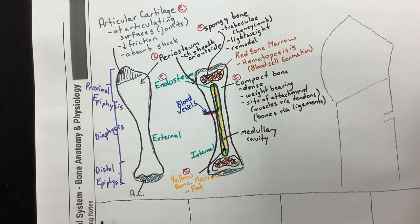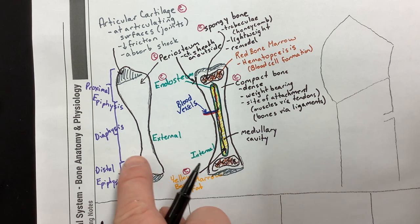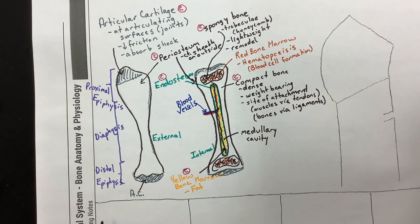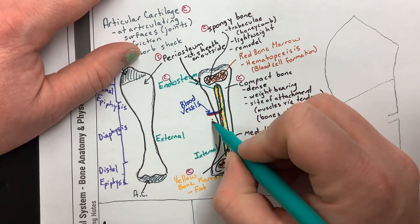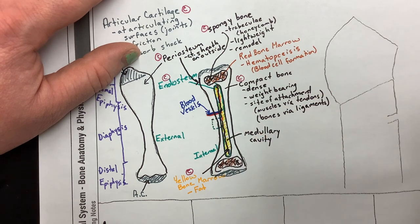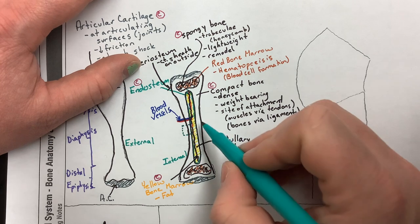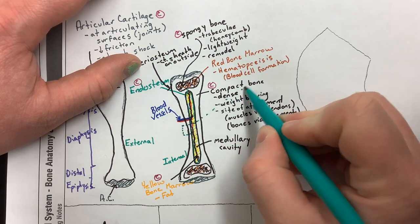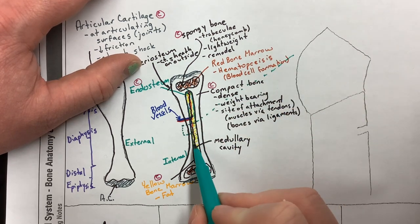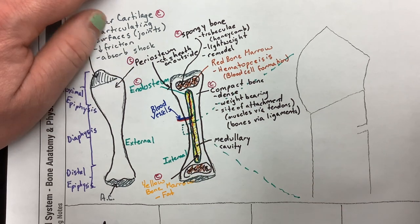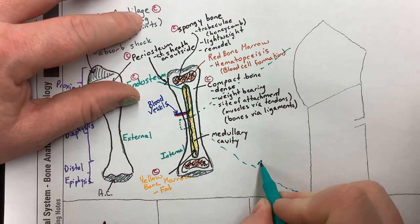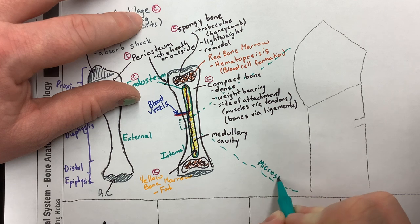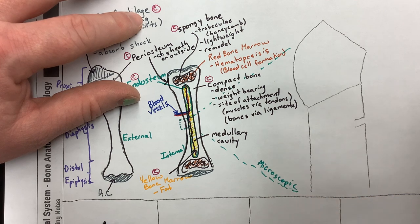So far we've covered gross anatomy — things visible to the naked eye. Now we'll zoom in to see how bone looks microscopically. We're going to take a small section and create an exploded view showing external gross anatomy, internal gross anatomy, and now microscopic bone anatomy.